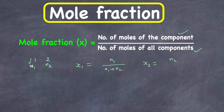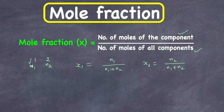x2 equals n2 divided by the total number of moles of all components, so n1 plus n2. The sum of mole fractions of all components in a solution is always going to be equal to 1.